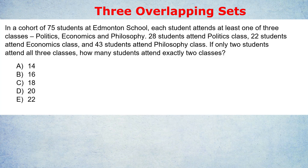Don't worry if that went fast — I've got another example coming up testing the exact same thing. Except this time, we're not even going to use a diagram. The formula is so powerful we don't need it. What about this question? In a cohort of 75 students at Edmonton School, each student attends at least one of three classes: Politics, Economics, and Philosophy. 28 students attend Politics class, 22 attend Economics class, and 43 attend Philosophy class. If only two students attend all three classes, how many students attend exactly two classes?